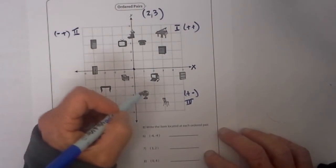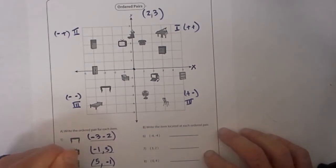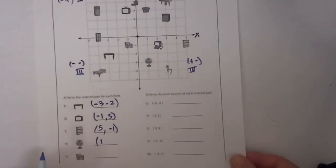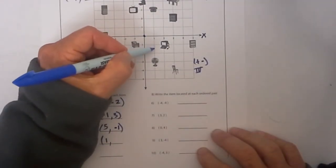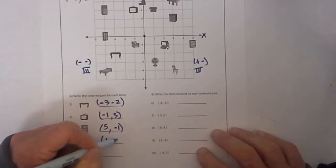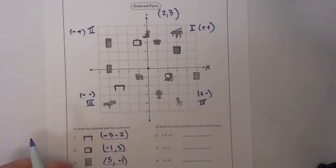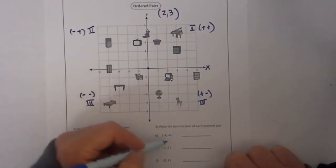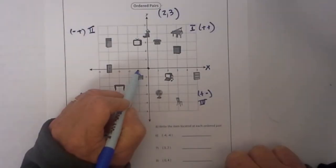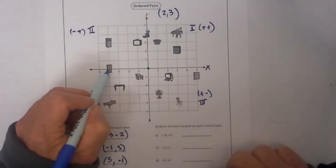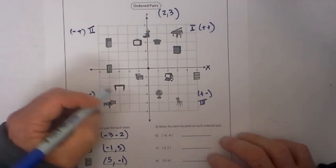Let's go ahead and work one more. Let's look at the ordered pairs and find them on the graph. The first ordered pair is negative 4, negative 4. The first number tells us the x so we will go over negative 4, 1, 2, 3, 4 and then we go down negative 4, 1, 2, 3, 4 and it is the cot.